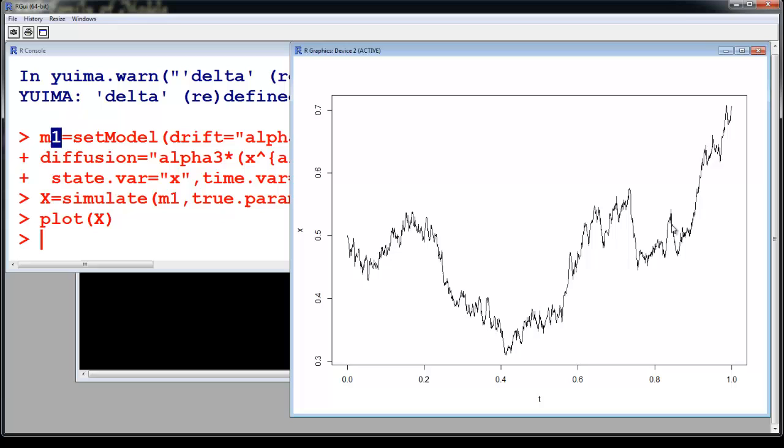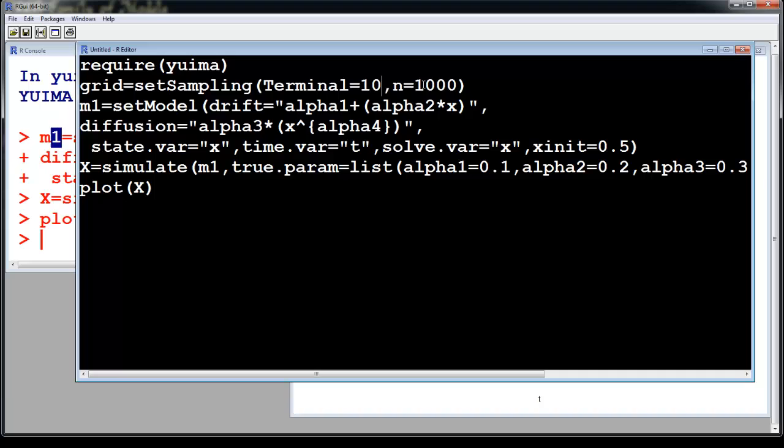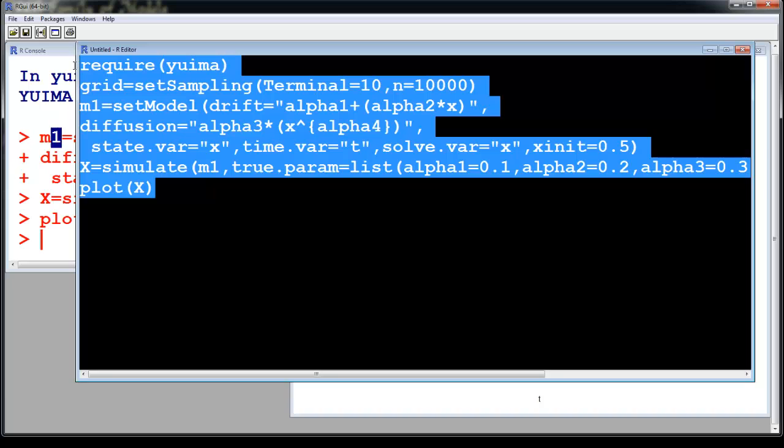And you see the graph is more choppy because I've chosen the grid as a thousand. It starts from 0.5 and the terminal point is 1. You can change your terminal point. I can change my terminal point to 10 and make this 10,000 also.